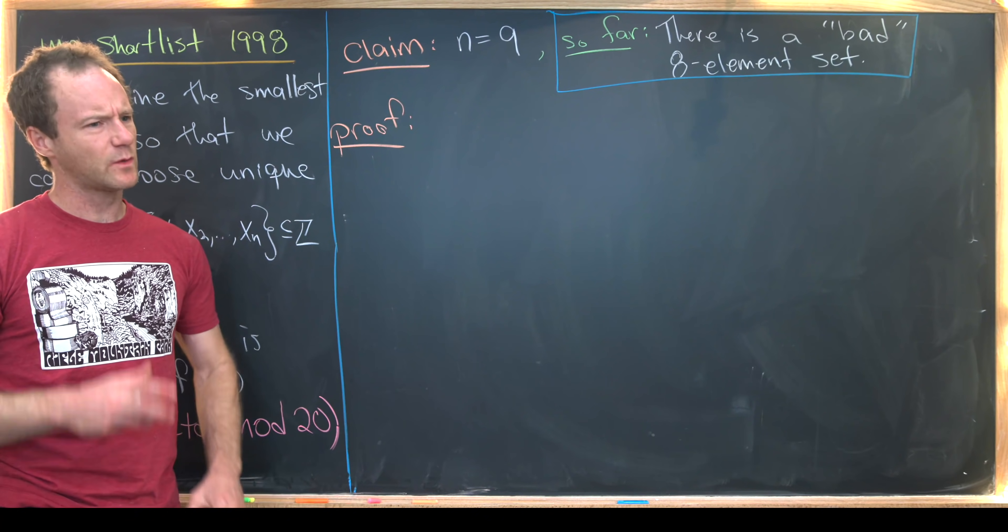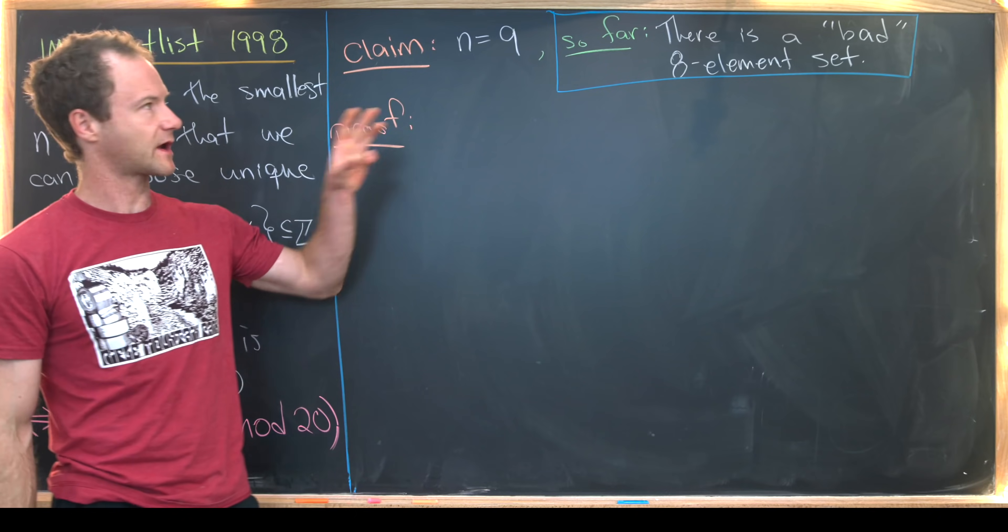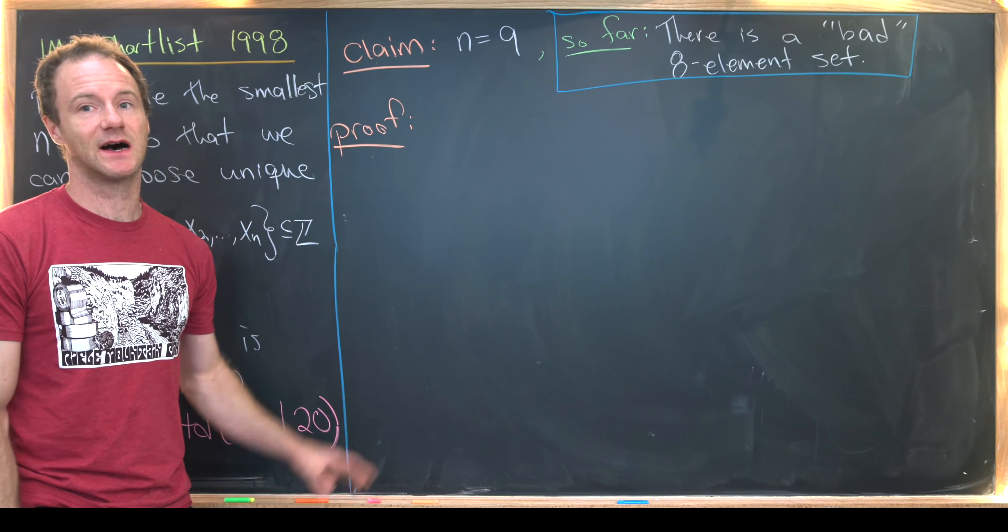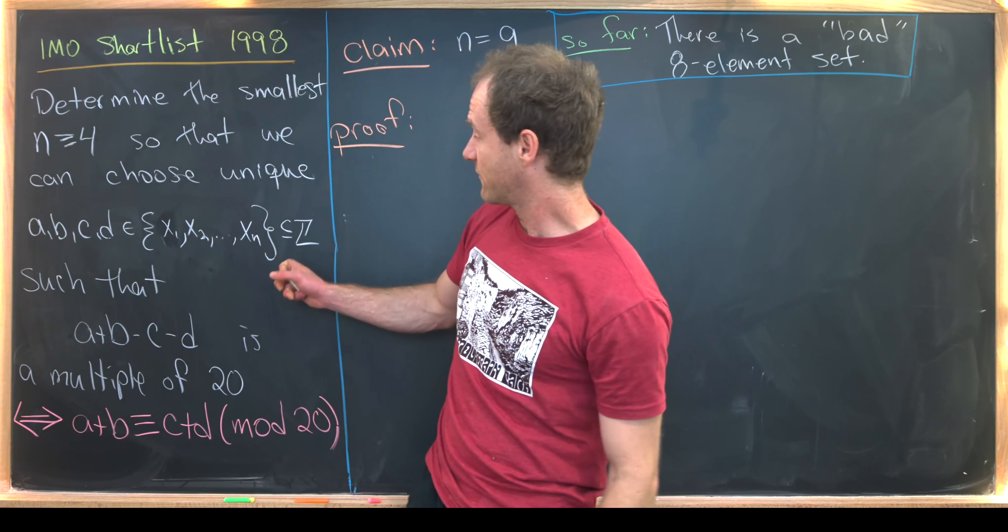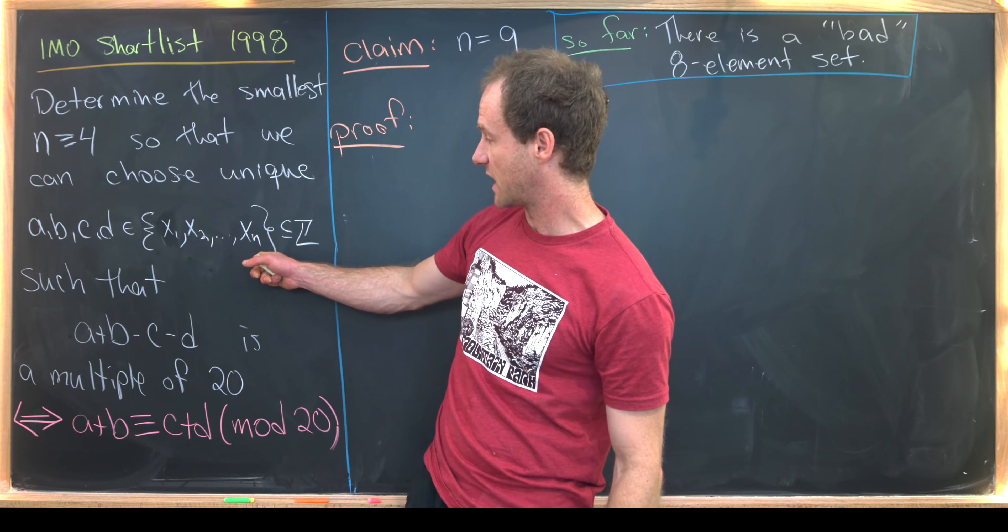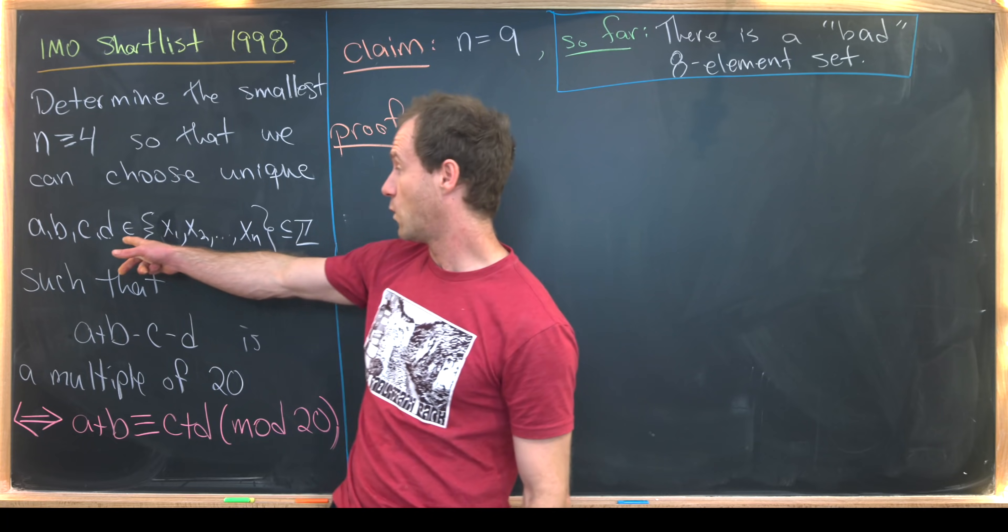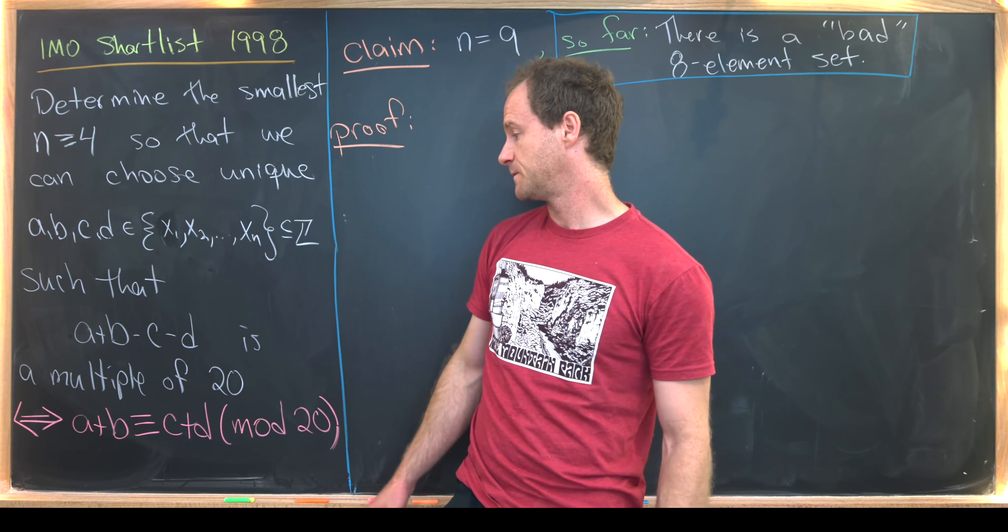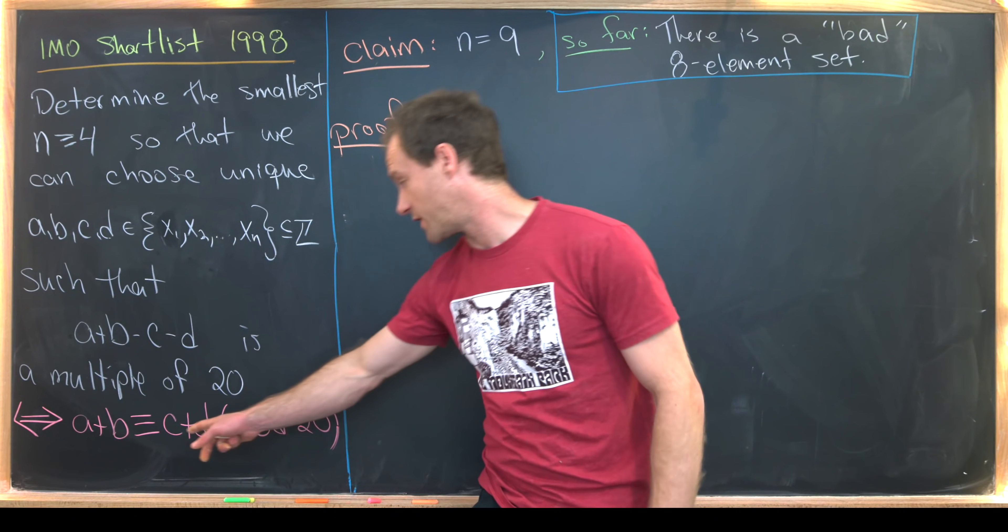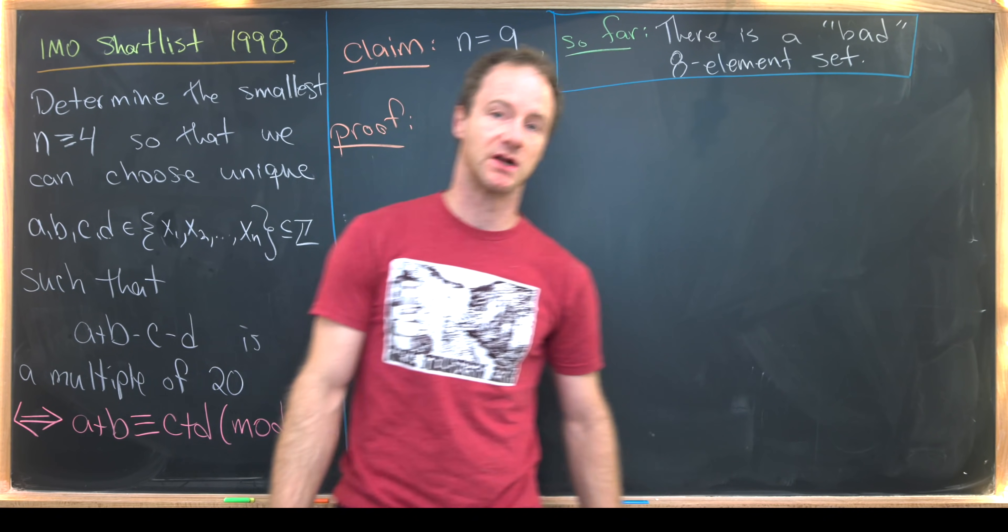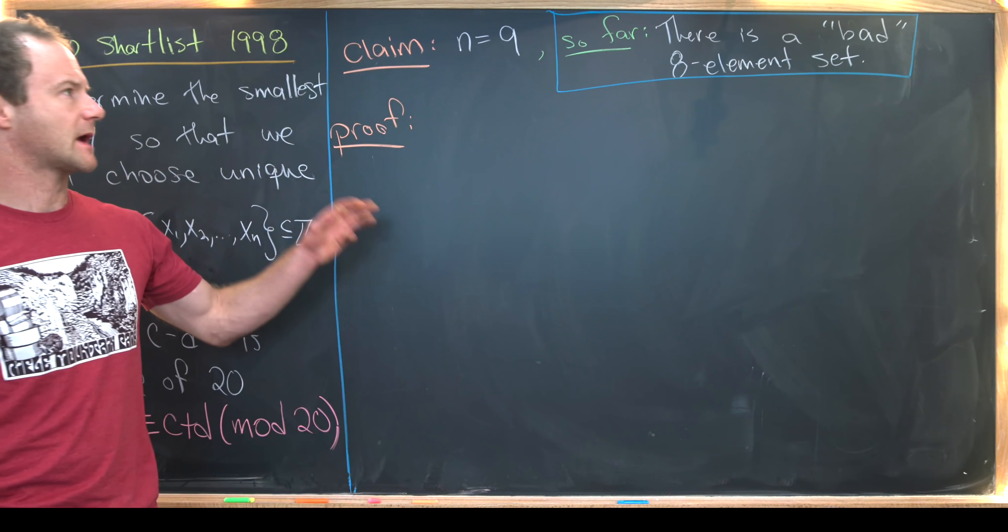Okay, so like we pointed towards on the last board, our claim is that n is nine. That is, every set with nine or larger elements has the property that you can take four unique elements and arrange them so that a plus b is congruent to c plus d modulo 20.